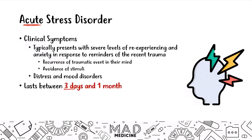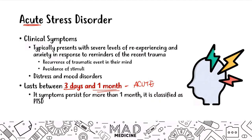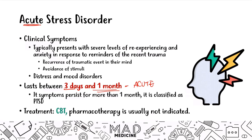It usually lasts between three days and one month. That's very important because in psych, the duration is very important, especially for diagnostic criteria. So if it lasts between three days and one month, it is acute stress disorder. If symptoms persist more than a month, we classify that as PTSD, which we're going to talk about coming up. For ASD, you're going to mainly treat this with CBT — cognitive behavioral therapy is the mainstay. Pharmacotherapy is usually not indicated because within a month, these patients usually get over it and find coping mechanisms that work for them.